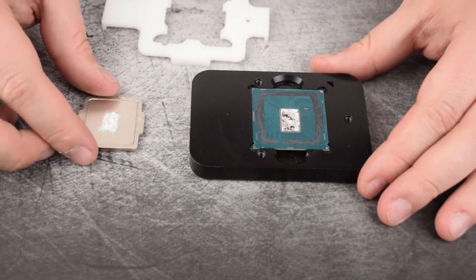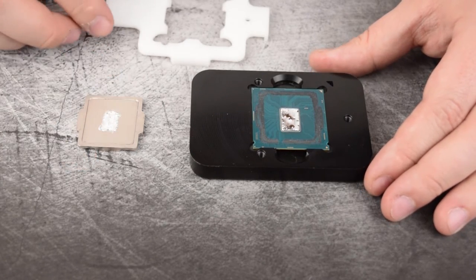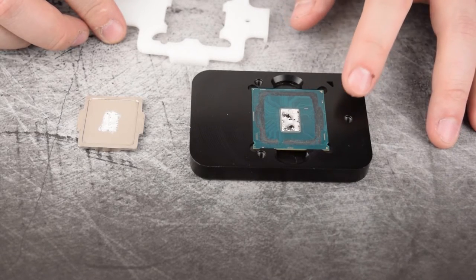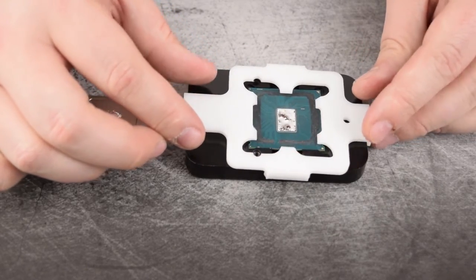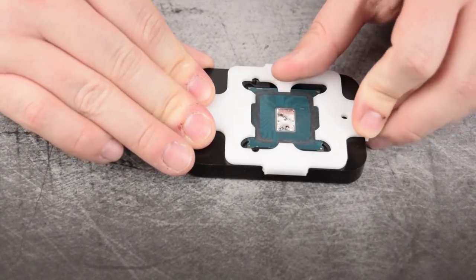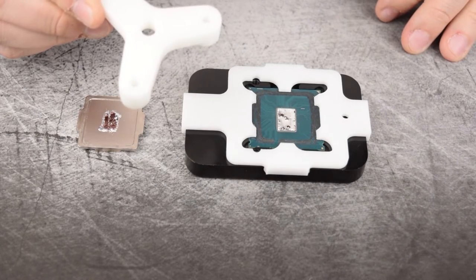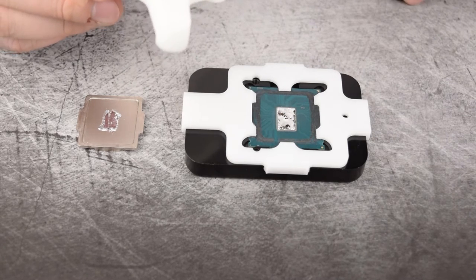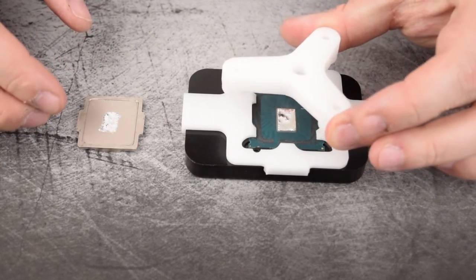Now that we have the liquid metal applied to both the IHS and the core, we're going to go ahead and use the same tool that we did to take it apart to put it back together. So this is the same base. You'll put it back in this base. And then you'll use the supplied cover. And it snaps into place. Just like that. Next you'll use this piece that applies pressure. So you're going to take this piece and it will go right over the top.